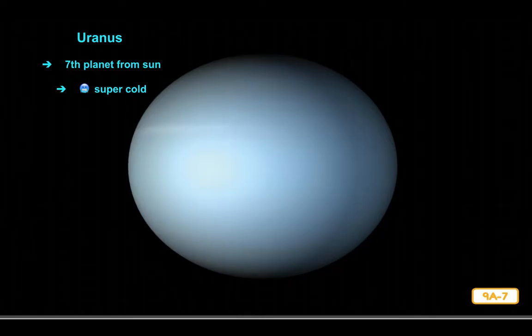Uranus has one very special characteristic: it rotates on its side. In comparison to Earth and the other planets, Uranus's axis is sideways — as though someone turned the planet on its side. Lying on its side makes Uranus unique.